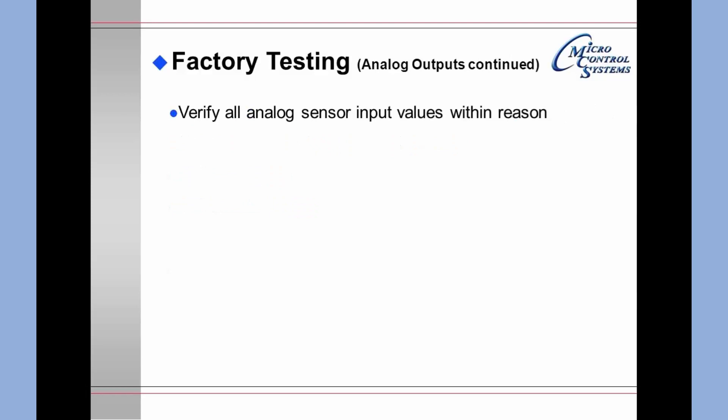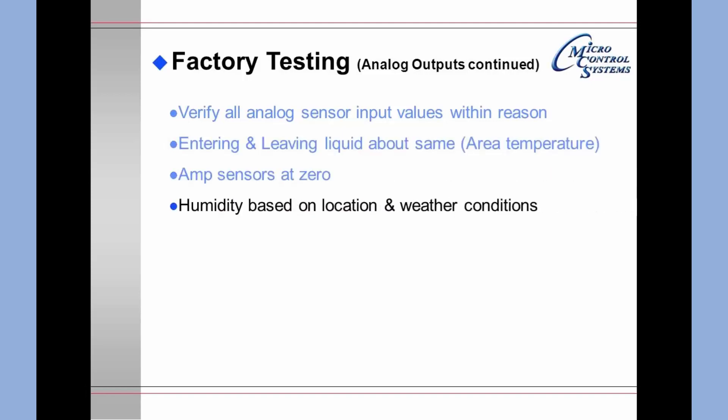Verify that all analog sensor input values are within reason. The entering and leaving liquid should be about the same temperature, and if the system has been off for three or four days, it should match the area temperature. Amp sensors should read zero. Humidity should be based on the location and the current weather conditions.